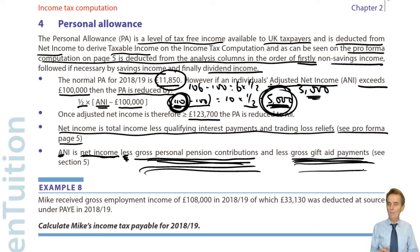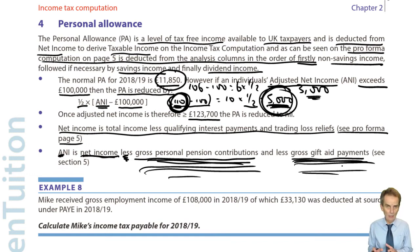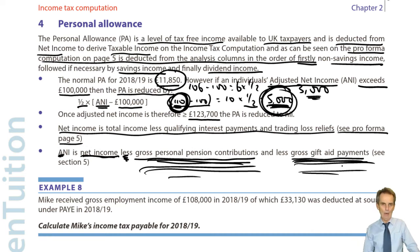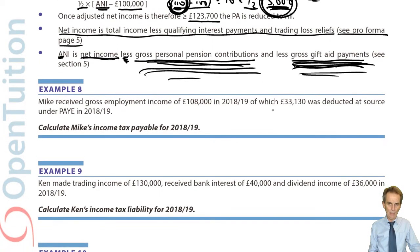These items may also extend the basic rate band limit of £34,500 and the higher rate band limit of £150,000 by the gross amount of pension contributions or gift aid payments — allowing more income to be taxed at basic rate instead of higher rate, or higher rate instead of additional rate. We'll cover the detail of that later, but learn those terms: gross personal pension contributions and gross gift aid payments.